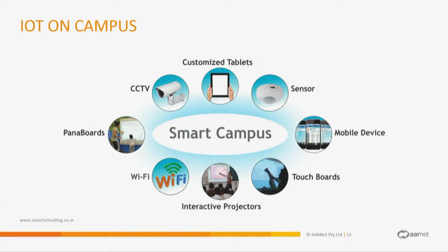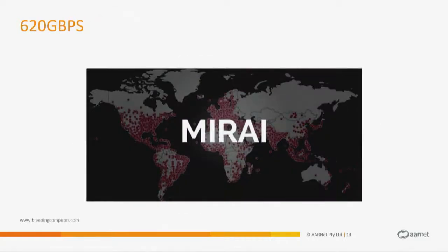Outside of home users, we've got smart campus devices. Campuses are going crazy for IoT devices — wiring up everything from light bulbs to light switches, projectors, smart TVs, screens, microwaves, ceiling fans and all sorts of stuff. The first big IoT botnet to hit the news was the Mirai botnet — an attack on Krebs that peaked at about 620 gigabits per second, which is why it got people's attention.